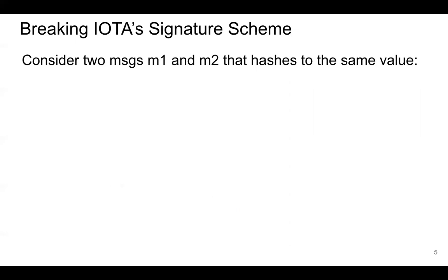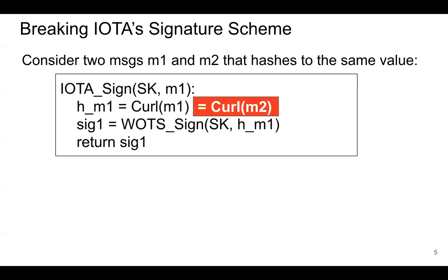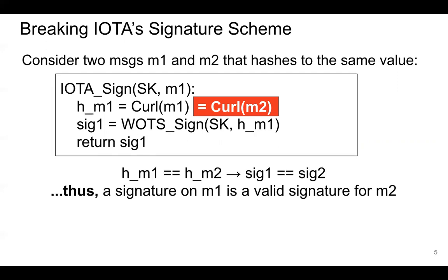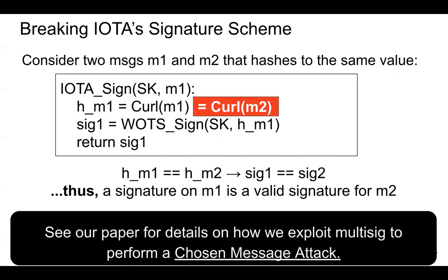As a byproduct of this, if you have two messages that hash to the same value — say message one and message two — there's a collision. Then a signature on the hash of message one is also a valid signature on the hash of message two. This means an attacker could perform a chosen message attack by creating two messages that collide: one harmless and one malicious. They ask another party to sign the harmless message, then use that same signature on the malicious message.